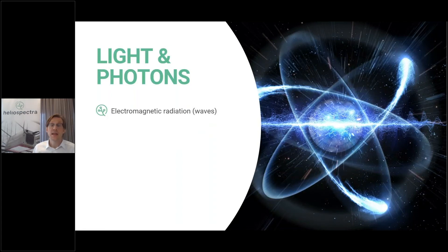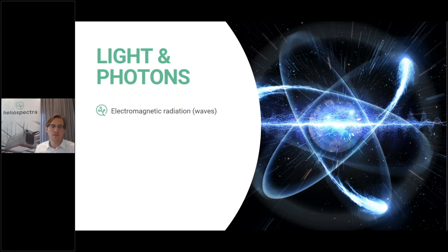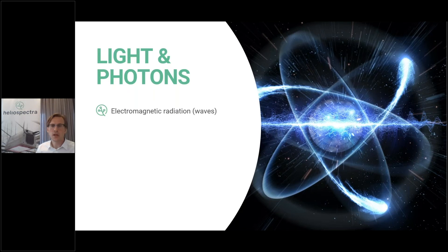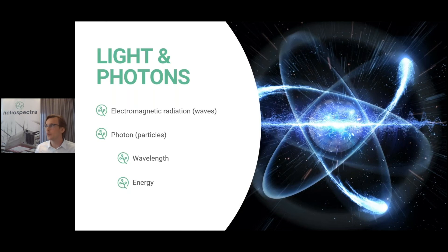Light is essentially electromagnetic radiation — a form of wave that transports energy. We have many different types of electromagnetic radiation, such as microwaves, radio waves, x-rays, and gamma rays. Among these, there is also light, or visible light. Another way of looking at this is to talk about photons — you can say that light is a type of particle, a photon, and there are many photons flowing or falling.